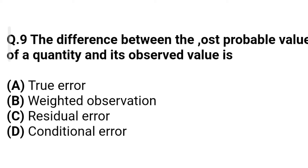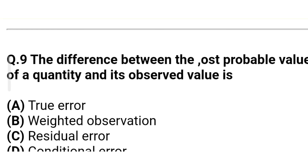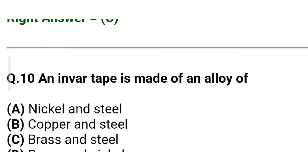Question 7: The difference between the most probable value of a quantity and its observed value is — Option A: true error. Option B: weighted observation. Option C: residual error. Option D: conditional error. The correct answer is Option C — residual error.